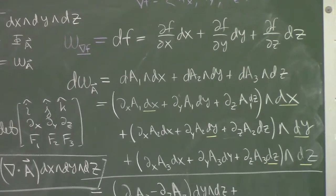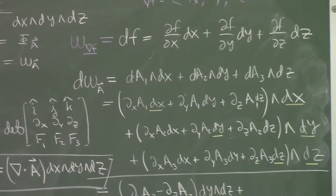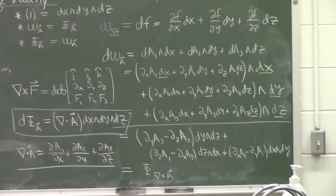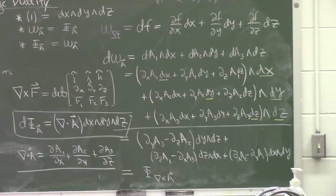Whereas the exterior derivative of a one form, if it's the work form of vector field A, it turns out to be the flux form of the curl of A, which you may or may not remember from calculus 3.